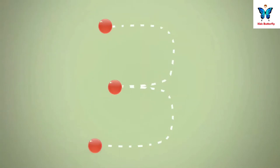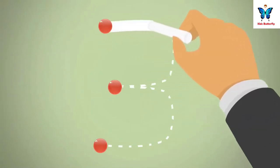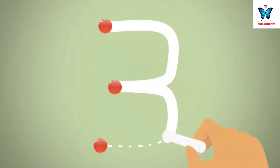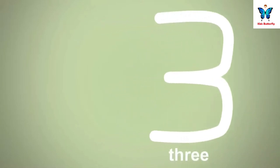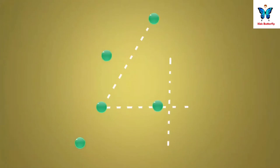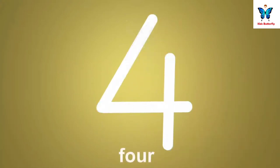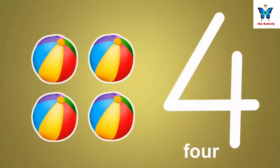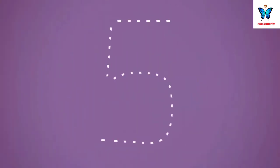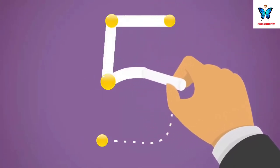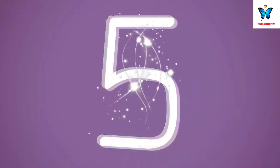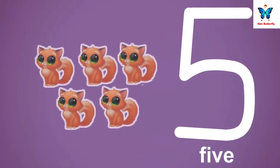3. Follow the dots to write the number. 3. 3 paints. 4. Follow the dots to write the number. 4. 4 balls. 5. Follow the dots to write the number. 5. 5 cats.